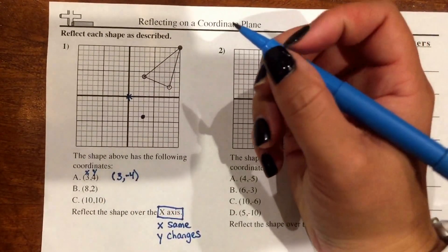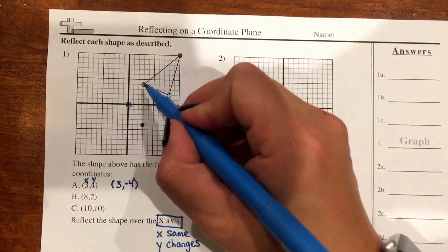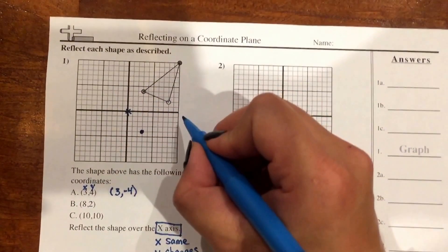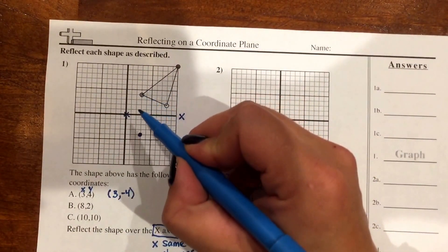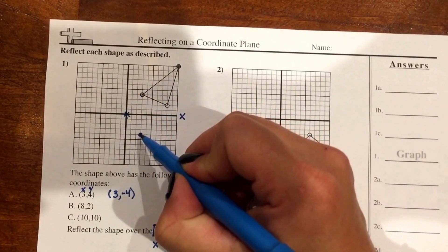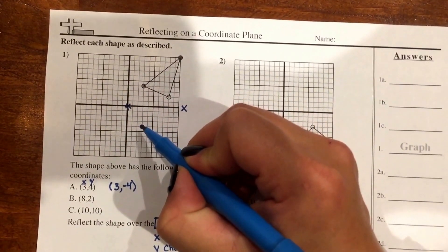And I can see already in my graph that my original point, if I jump over my x-axis, which I know my x-axis is the horizontal, if I jump over my x-axis, I land the same distance in quadrant 4.